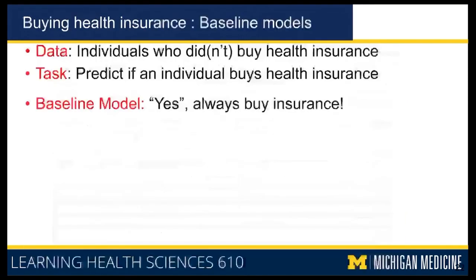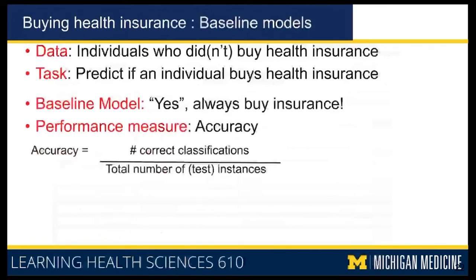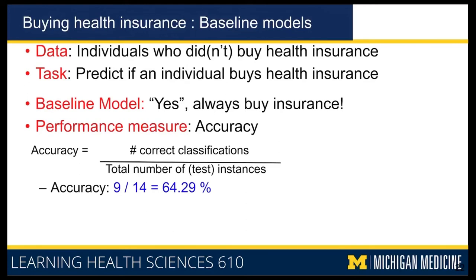For this model, if accuracy is your performance measure, then your model is nine out of 14 correct. Accuracy is the number of correct classifications divided by the total number of test instances. In your model there are 14 test instances — this is effectively a test phase since there was no real training. You are applying that model on all 14 instances, and nine of them were correct, giving 64.29%.